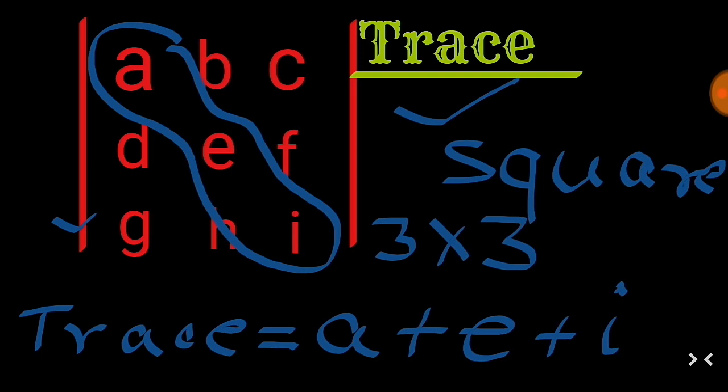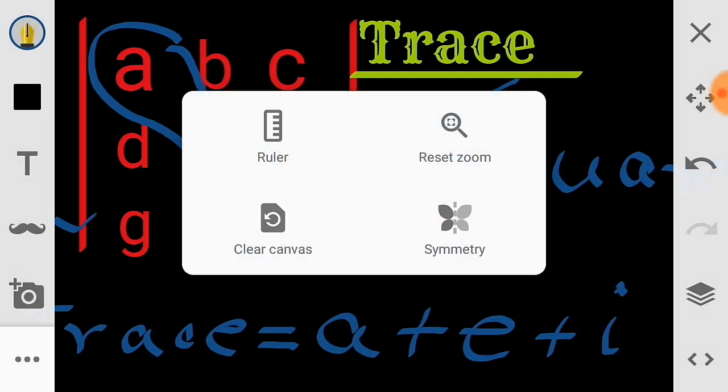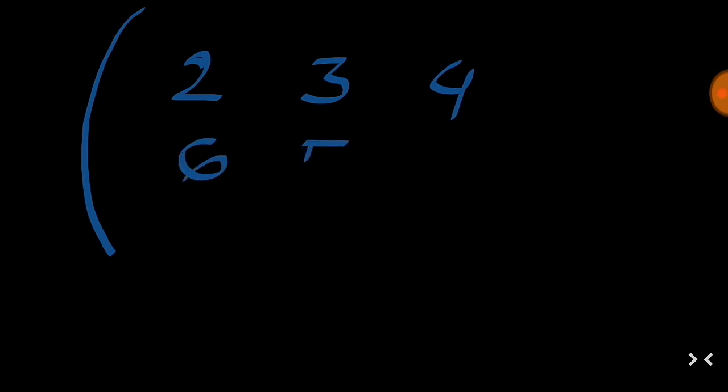And this is the trace of this matrix. Now take an example. This matrix is given by 2, 3, 4, 6, 5, 9, 2, 4, 6.